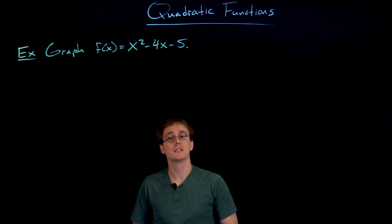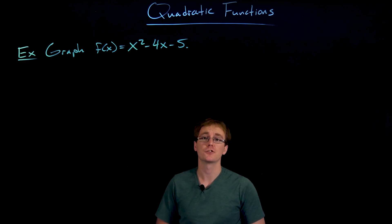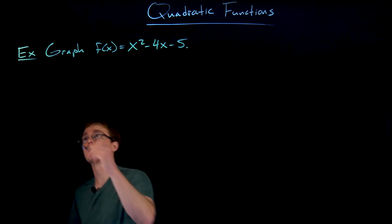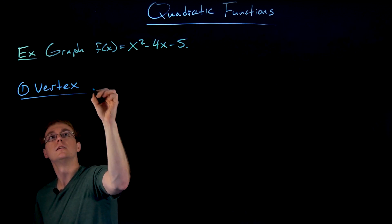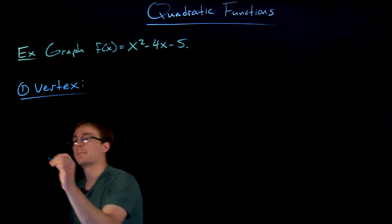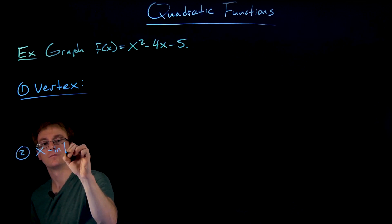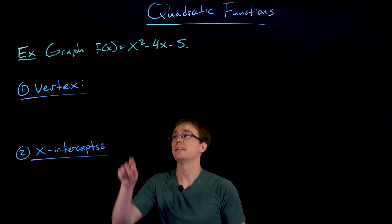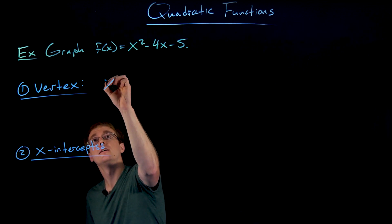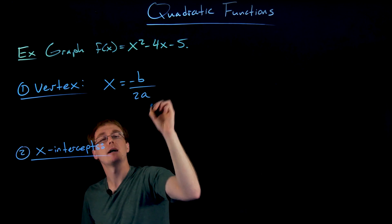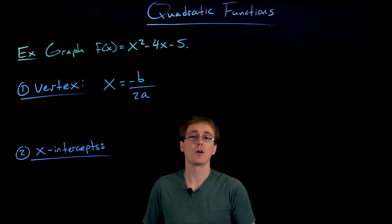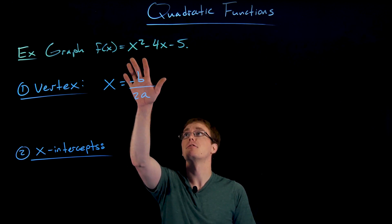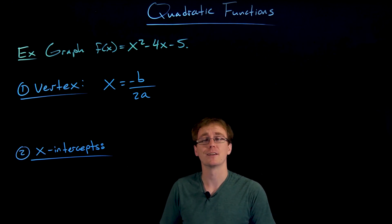In this example we want to graph the quadratic function f(x) = x² - 4x - 5. Remember, to graph a quadratic function or parabola we need three points — one of those points is the vertex and the others are going to be the x-intercepts or a pair of symmetric points. We can only use the -b/2a process if our quadratic function is in standard form ax² + bx + c, which it currently is.